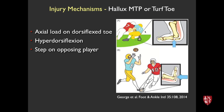Here's an athlete getting tackled — or doing the tackling — who is really hyper-dorsiflexing the great toe. There are the metatarsal, phalanx, and sesamoids. This is normally a really strong joint with strong soft tissues. Here's another example where a player going to make a catch lands on an opposing player's foot and hyper-dorsiflexes the foot.